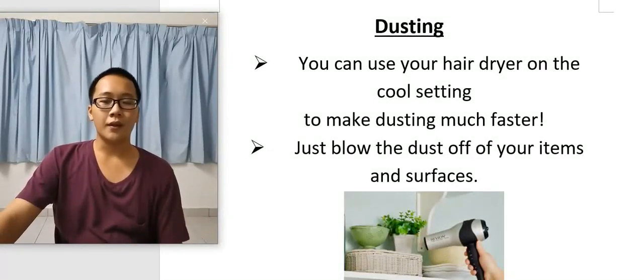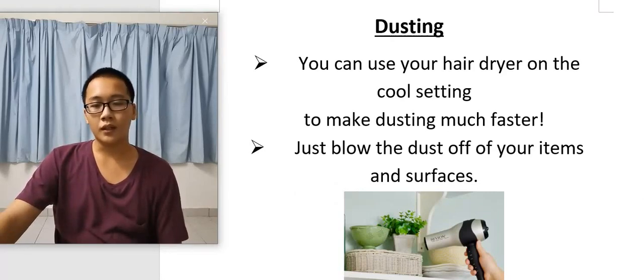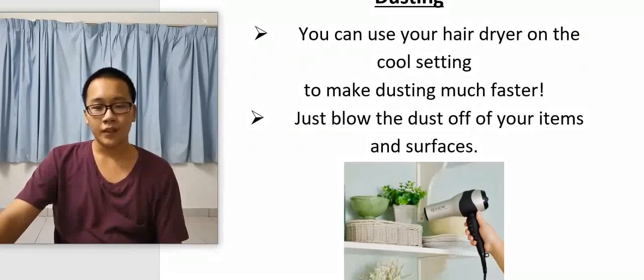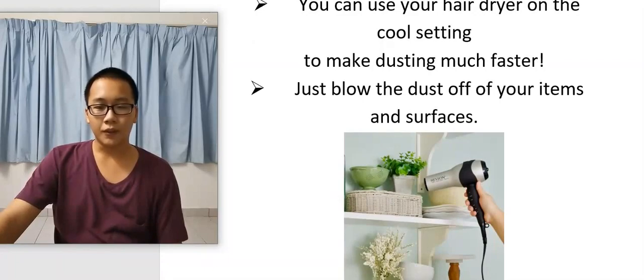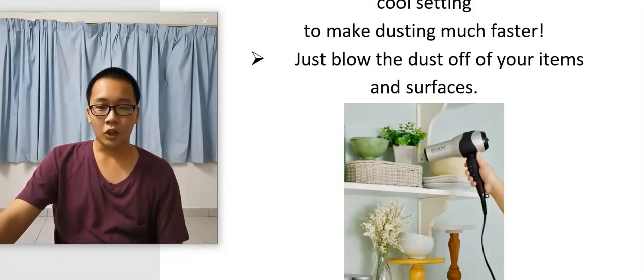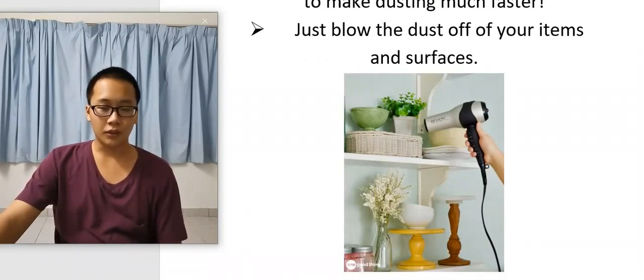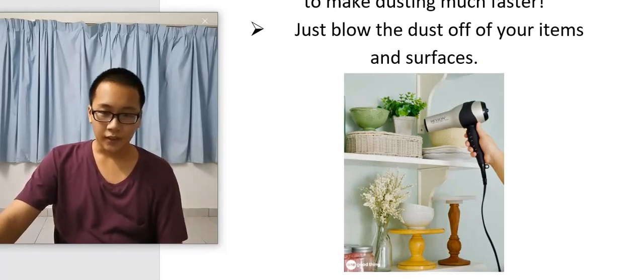Next, it's dusting. You can use your hair dryer on the cool setting to make dusting much faster. Just blow the dust off of your items and surfaces, then vacuum the dust off the floor.